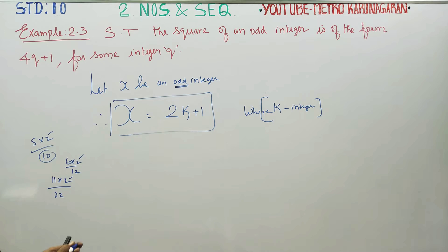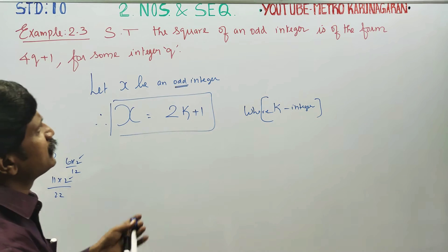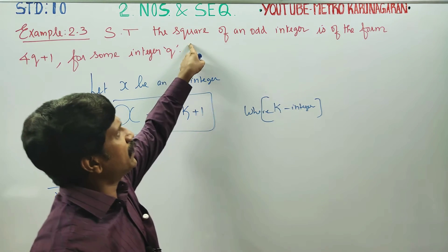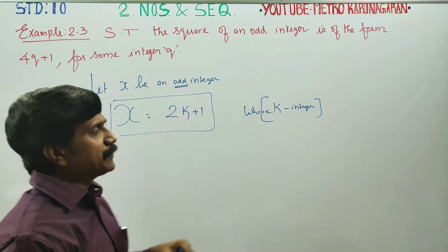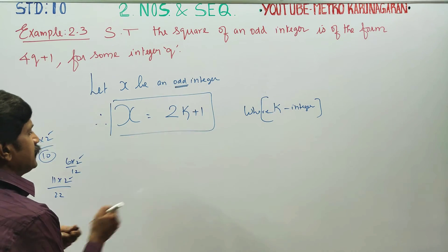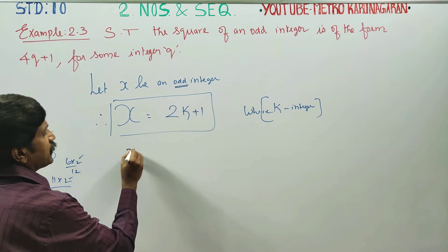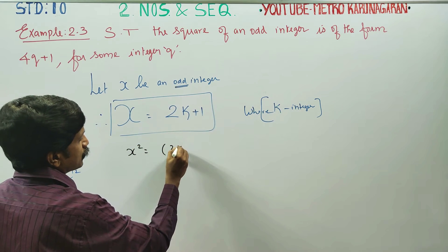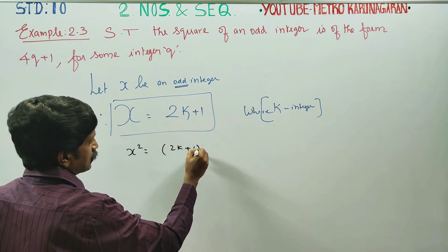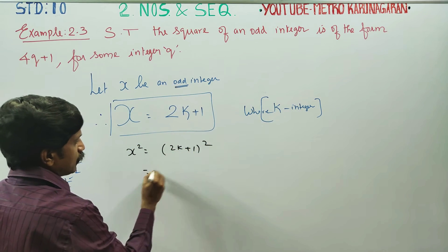Therefore, x is equal to 2k plus 1, where k is an integer. Since 2k is even, 2k plus 1 is odd. Now, how do you find the square of x? x squared is equal to (2k + 1) whole squared.